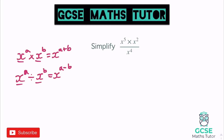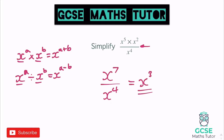Let's apply these rules. We have a multiplication on the top and the fraction line means divide, so we're dividing by x to the power of 4. First, tidy up the top: x to the power of 5 multiplied by x to the power of 2 — add the powers to get x to the power of 7. Then divide: 7 minus 4 gives x to the power of 3 as our final answer.